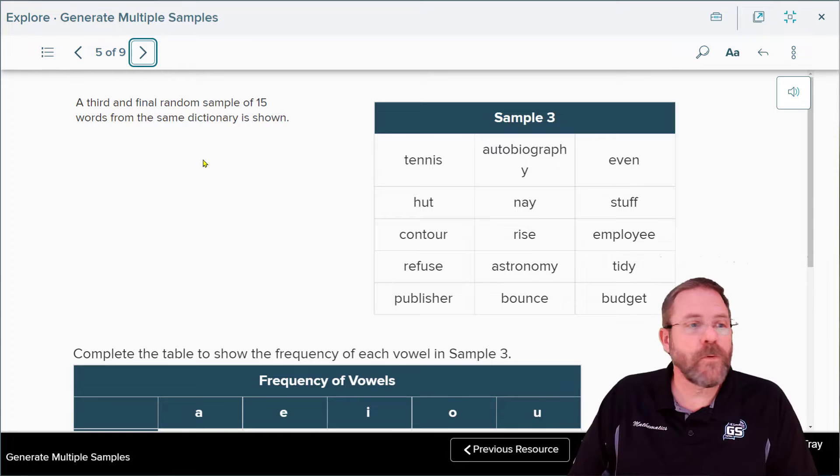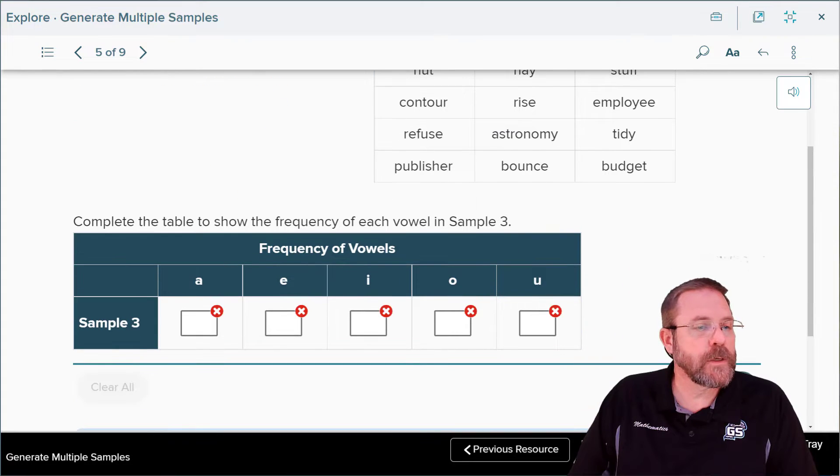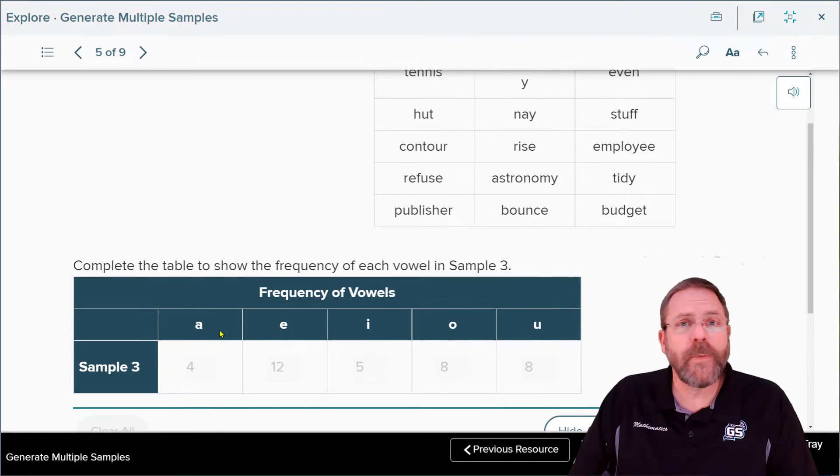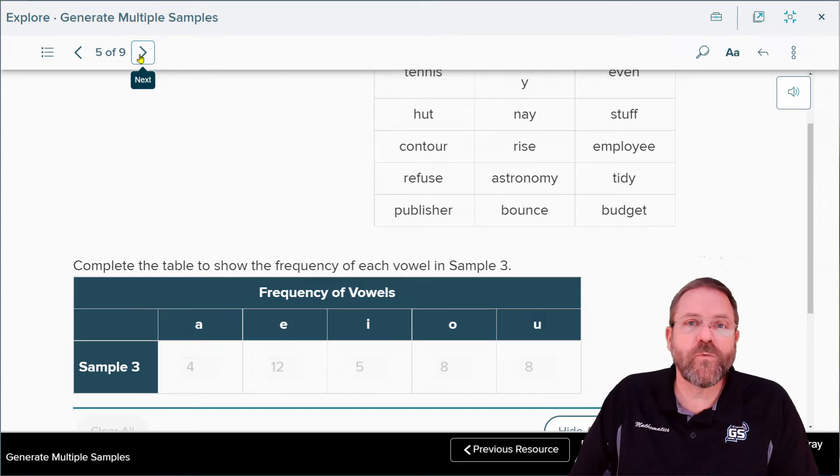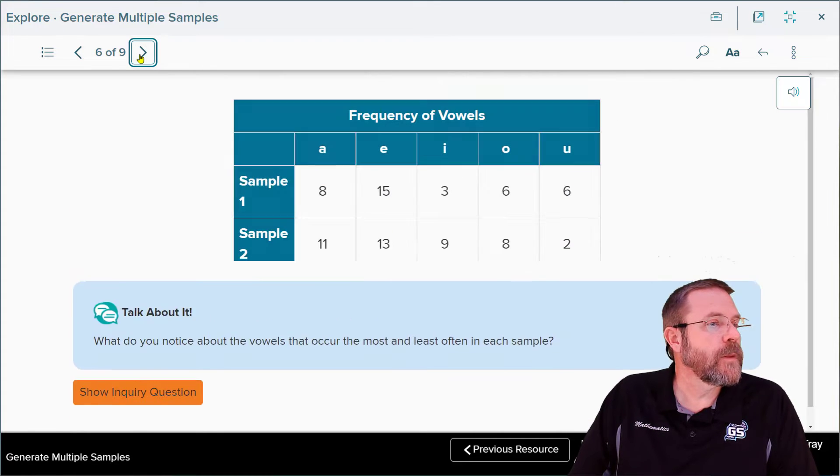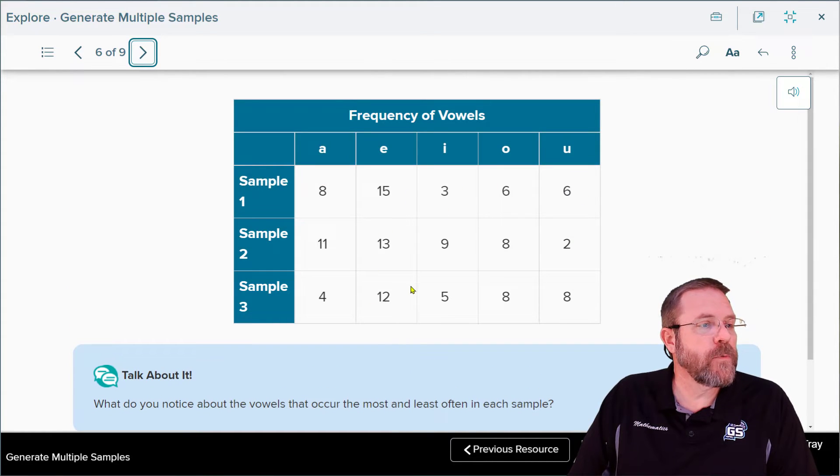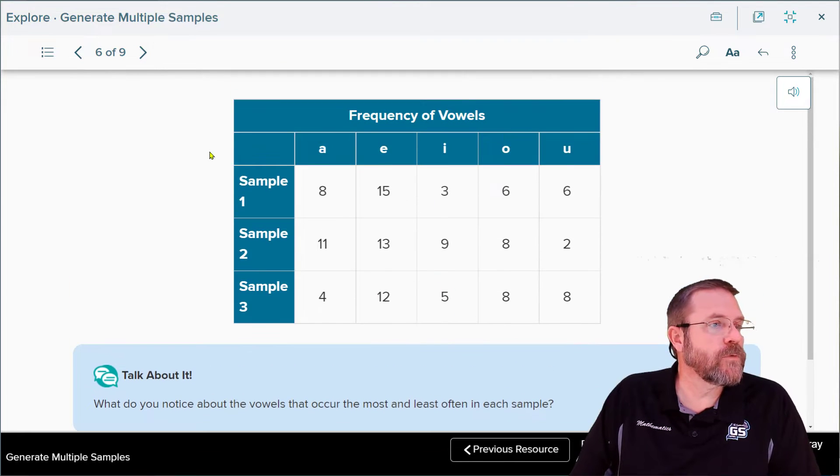Now we're going to do the same thing a third time. I'm just going to get them to show us the answers here to save some time. This time, A only occurred 4 times. Last time I think it was 10. E occurred 12, I 5, O 8, and U 8. So now we have three different sets of data. You can see the table filled out showing each sample and the variations you got in your data in those samples.